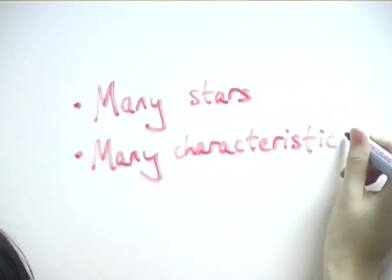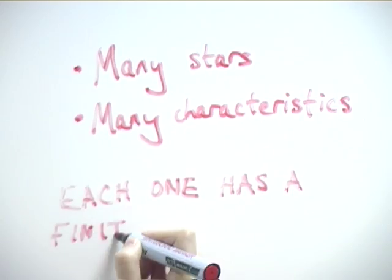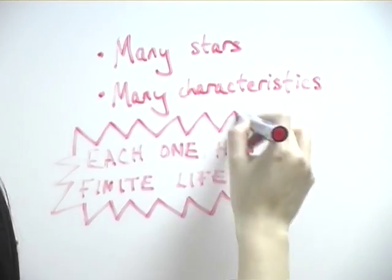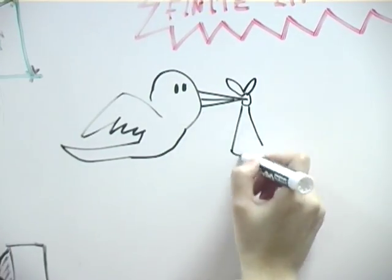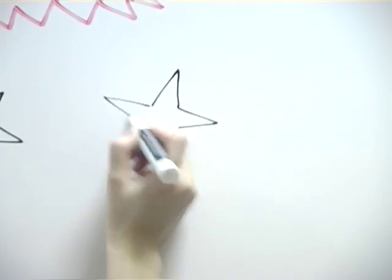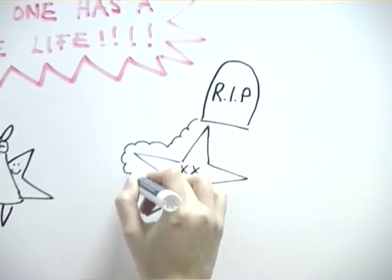However, there are many types of stars, each one with very different characteristics, and each with a finite life. Stars are continuously being born and are continuously dying. They each have a life they live with a start and an end.